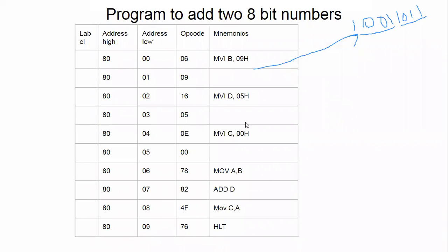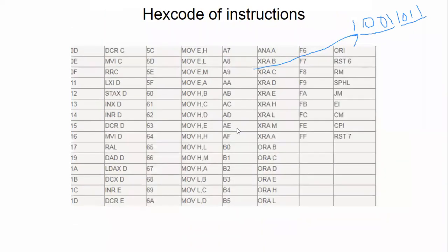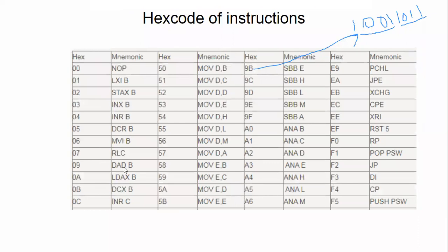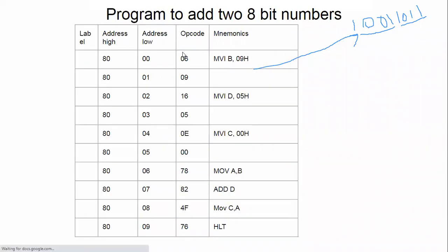In the B register, we are moving the value 09. MVI means move immediate — the data is present here itself. MVI B comma 09: for MVI B the hex code is 06, so 06 is the opcode and 09 is the data. It occupies two memory spaces — two bytes. Each occupies 8 bits, that is why it is called a two-byte, 16-bit instruction.